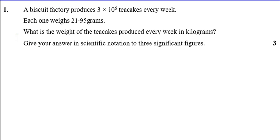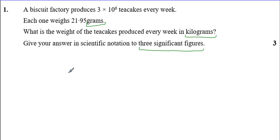Question one. A biscuit factory produces 3×10¹² point 6 tea cakes. Each one weighs 21.95 grams. What is the weight of the tea cakes every week in kilograms? We need to do a bit of work at the end to make sure we're doing it in the right format — scientific notation to three significant figures. So that's how many tea cakes they produce each week: 3×10¹²·⁶. Every one of them weighs 21.95 grams, so we're going to multiply by 21.95.